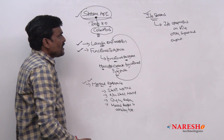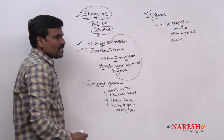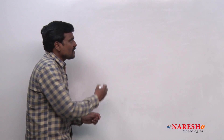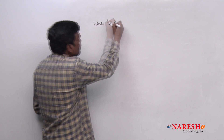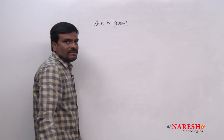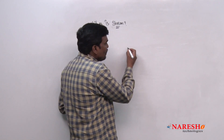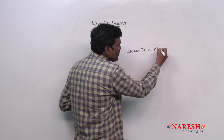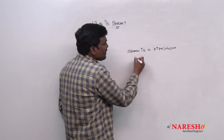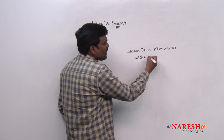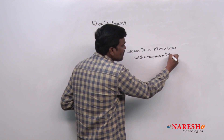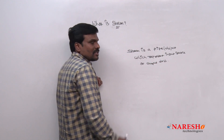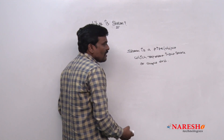Before talking about the Stream API, let me give you a simple definition of what a stream is exactly. A stream is a pipe or an object which represents an input source or an output destination.